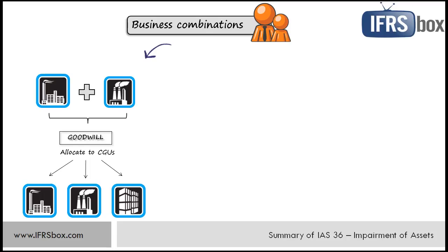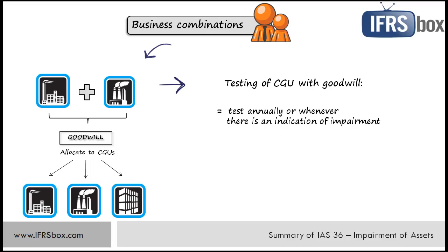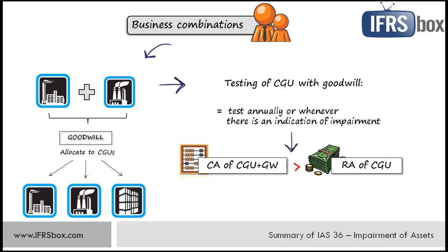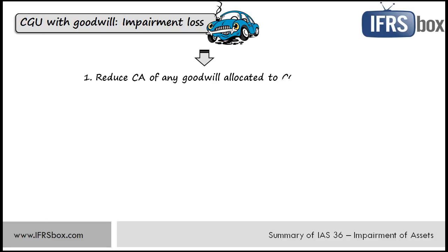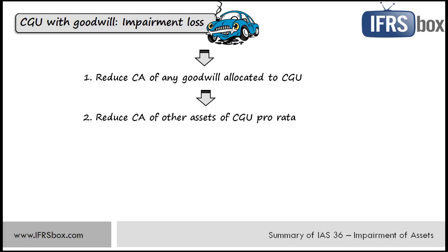IAS 36 prescribes how to perform testing of a CGU with allocated goodwill. It must be tested for impairment annually and whenever there is an indication that a unit might be impaired. Testing means comparing the carrying amount of the CGU including allocated goodwill with the recoverable amount of that unit as a whole. If carrying amount is greater than recoverable amount, there is an impairment loss. First, the impairment loss shall reduce the carrying amount of any goodwill allocated to the CGU. Then if goodwill has been fully reduced and there is still impairment loss remaining, allocate the rest to other assets in the CGU pro rata on the basis of their carrying amounts. You should be careful because you are allocating impairment loss of the whole CGU to individual items that may not have been testable individually.